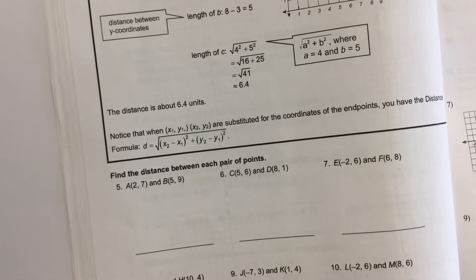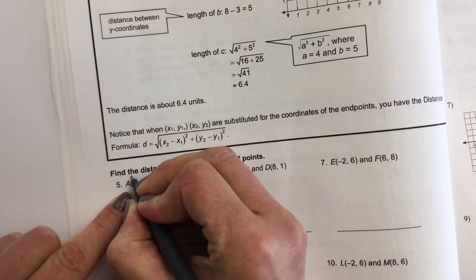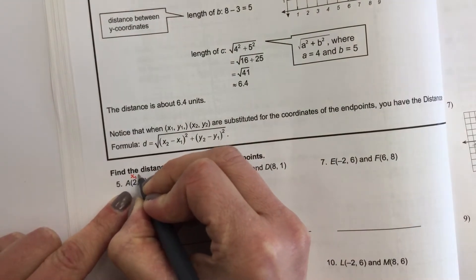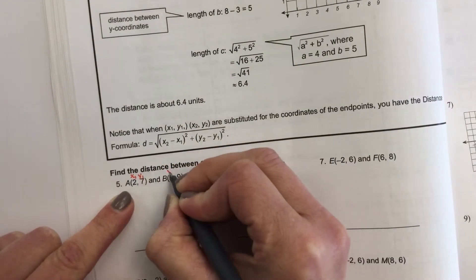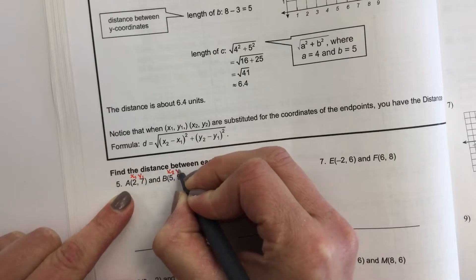The first one is that I label. So we are going to have x sub 1, y sub 1, x sub 2, y sub 2.